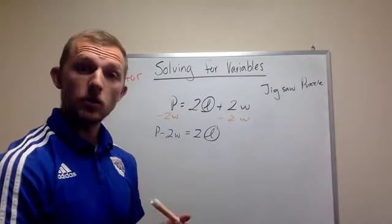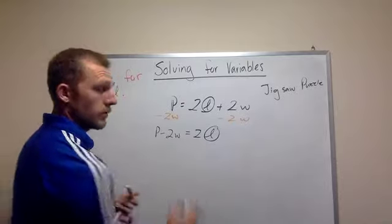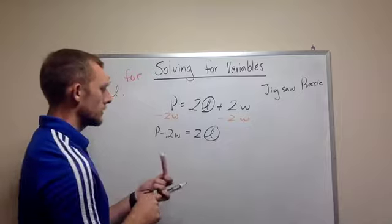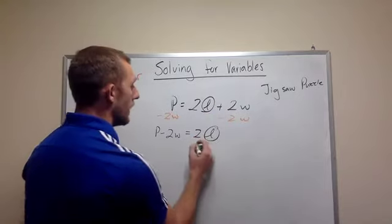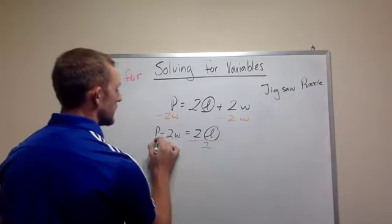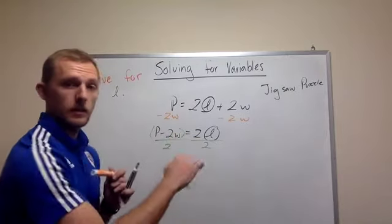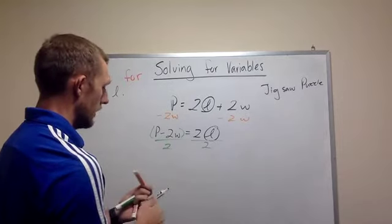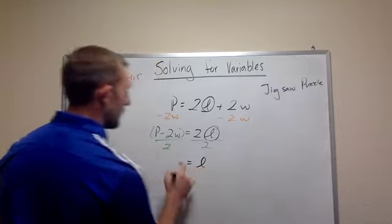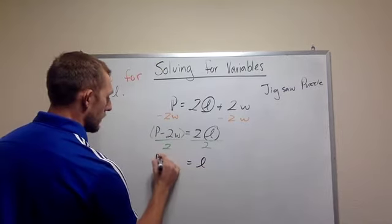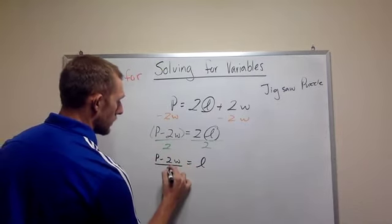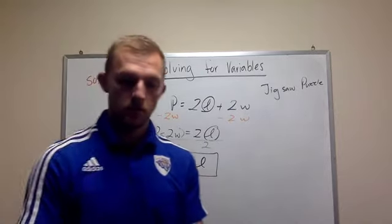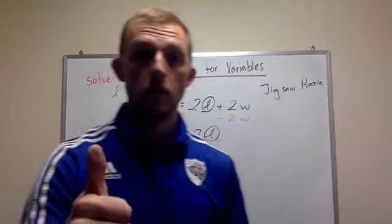So I have to get rid of that 2, which is the next part of completing the puzzle. So let's get rid of the 2. Since it is in the numerator, I want to divide by 2 on both sides. Remember, it's from the whole side. So you go ahead and do that. And it comes out to be L equals P minus 2W all over 2. There you go.